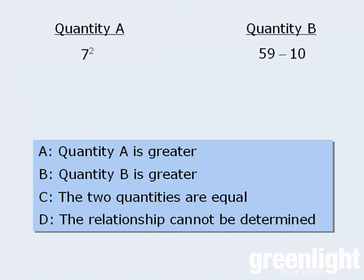Here's another one. For this one, when we evaluate quantity A, we get 49, and when we evaluate quantity B, we get 49 as well. Since the two quantities have equal value, the correct answer here is C.